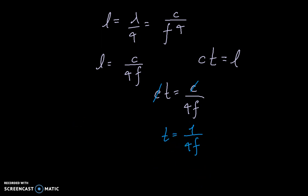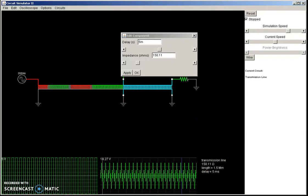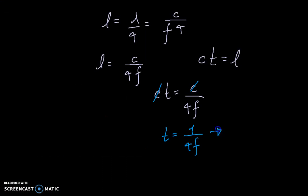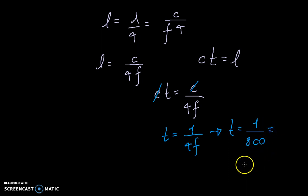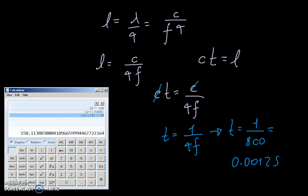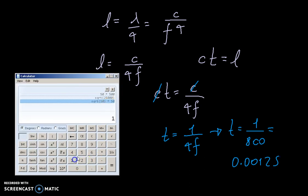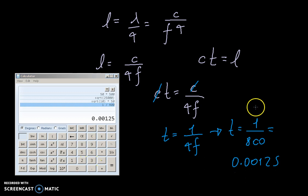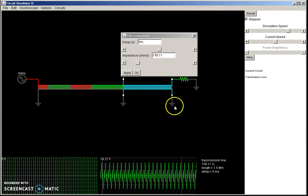Remember, my frequency here is 200 Hz. So our delay will be equal to 1 over 800, which is equal to 0.00125 seconds. Let me verify — 1 divided by 800 — yes, that's right. So that's what the delay has to be on this line: 0.00125.